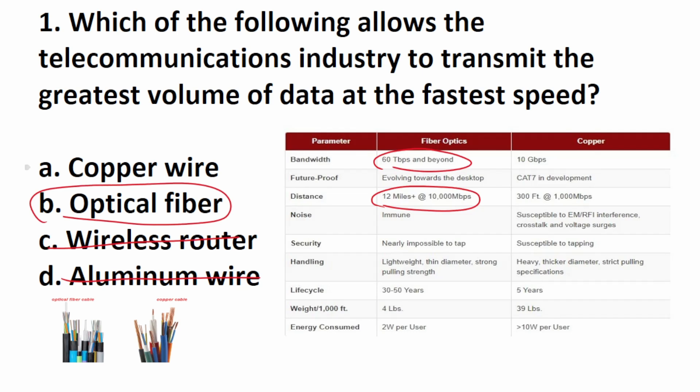So to answer this one, it's going to be B, optical fiber. Compared to optical fiber, copper wire is considered somewhat archaic. So this one is B.